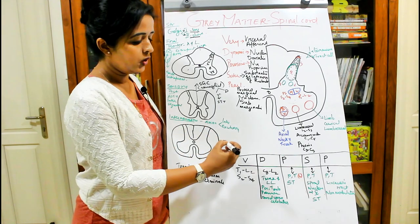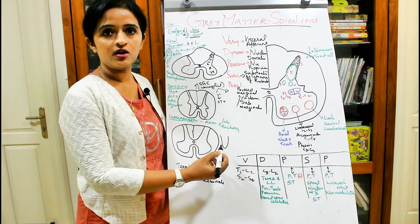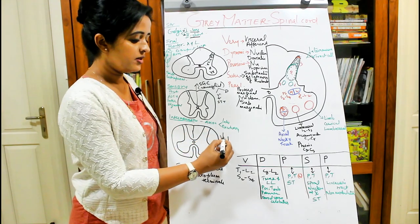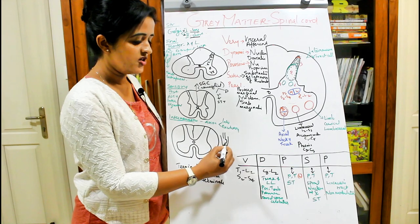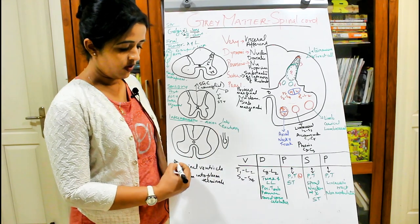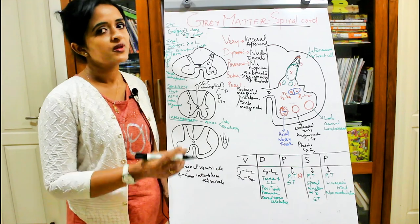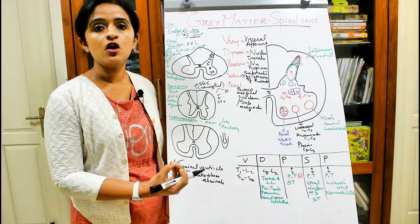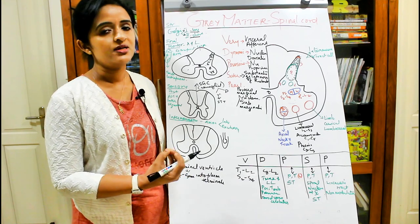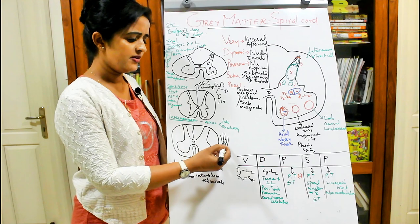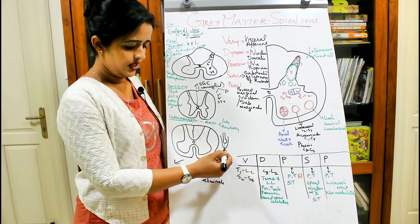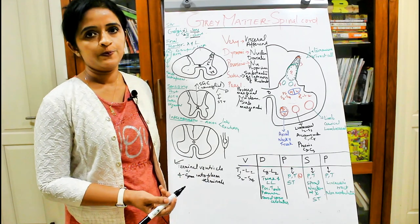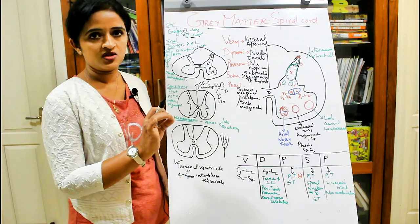The lowermost portion of the spinal cord is called the conus medullaris. At the region of the conus medullaris, the central canal gets slightly dilated to form the terminal ventricle. So we have the fourth ventricle in the pons and medulla, then the central canal of the spinal cord, and in the conus medullaris, the terminal ventricle, which extends roughly four to five millimeters into the filum terminale.